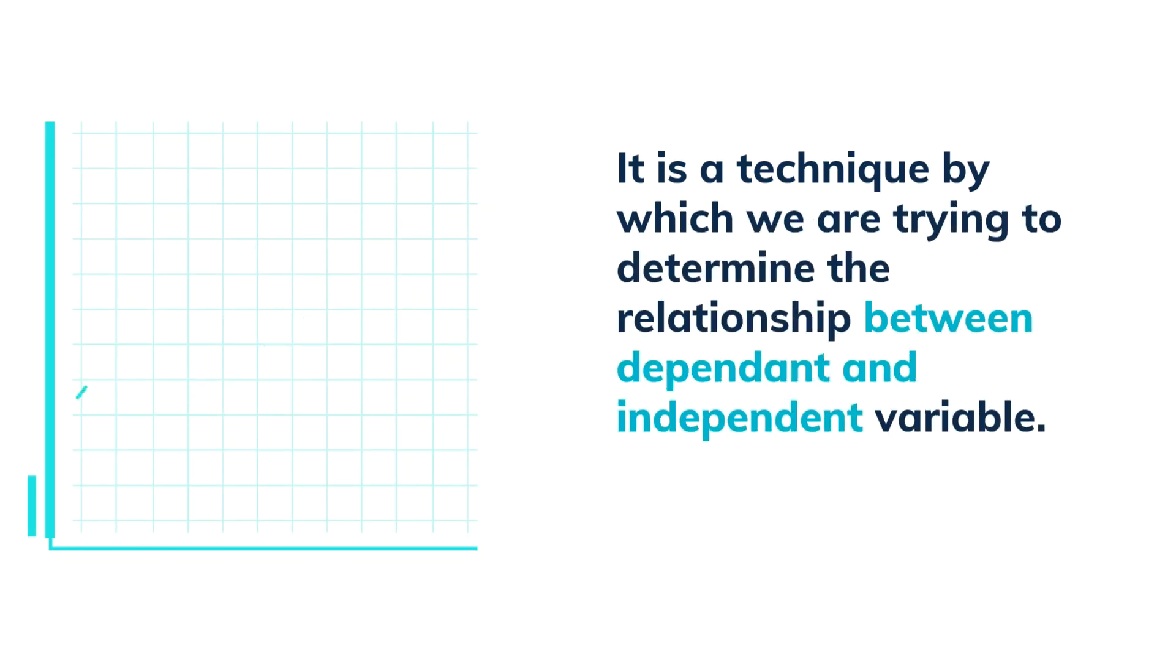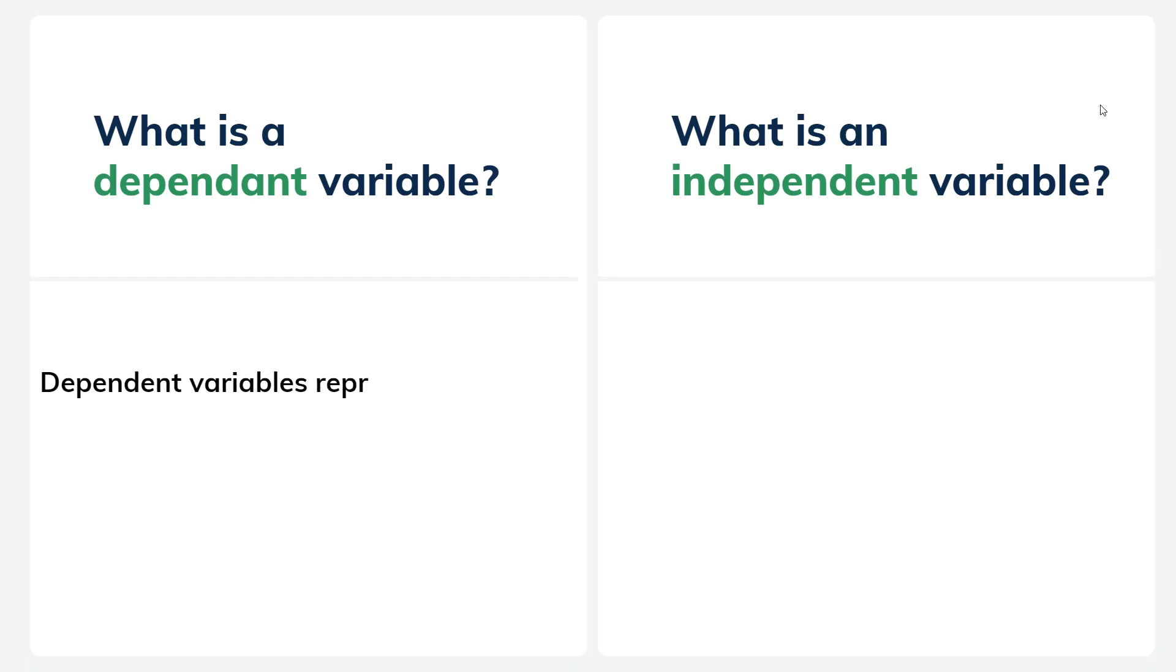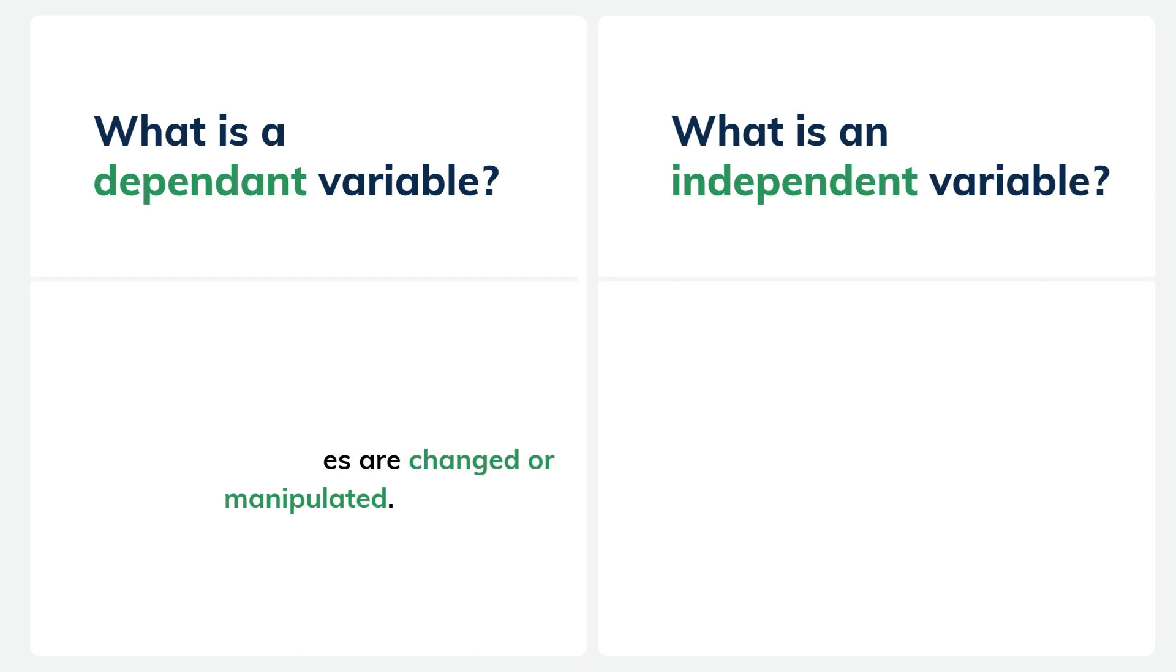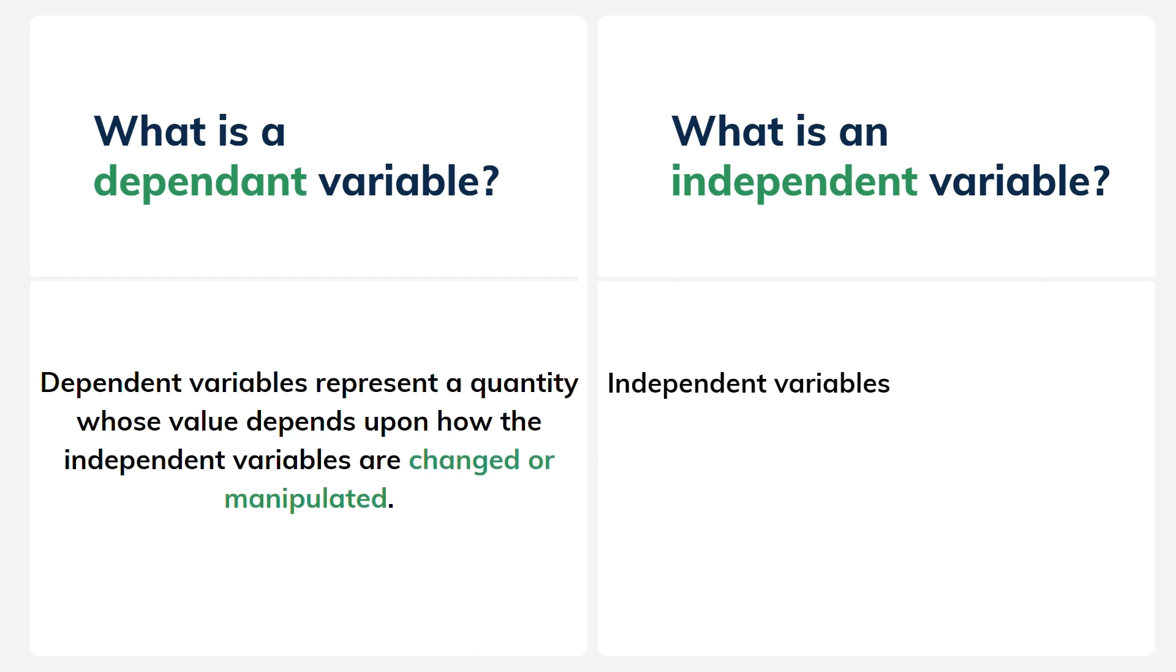So what are dependent and independent variables? A dependent variable represents a quantity whose value depends upon how the independent variables are changed or being manipulated. And an independent variable represents a quantity that is being manipulated.